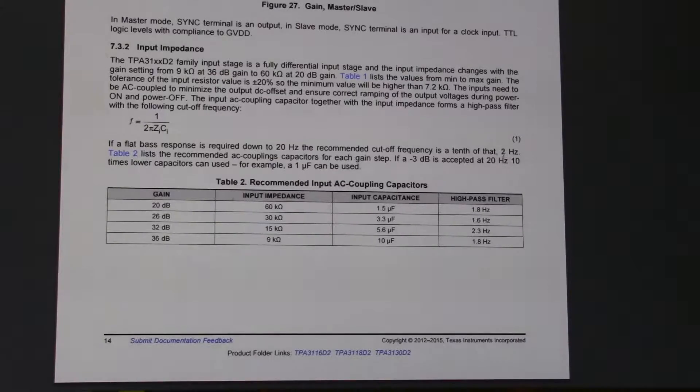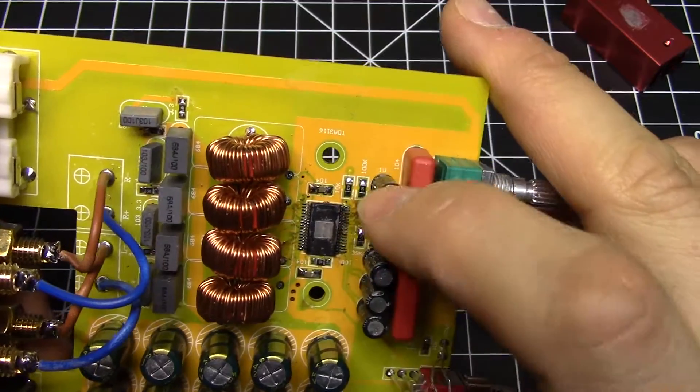Table two lists the recommended AC coupling capacitors for each gain step. If a minus 3 decibel is acceptable at 20 hertz, then a 10 times lower capacitor can be used. We're probably over-capped at this point, which will maybe increase the bass response on this unit a little bit.